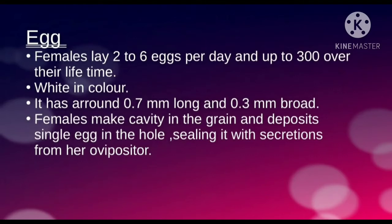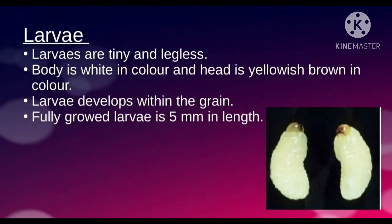The eggs are white in color, around 0.7 millimeters long and 0.3 millimeters broad. Females make a cavity in the grain and deposit a single egg in the hole, sealing it with secretions from her ovipositor. The second stage is the larval stage, or grub stage.